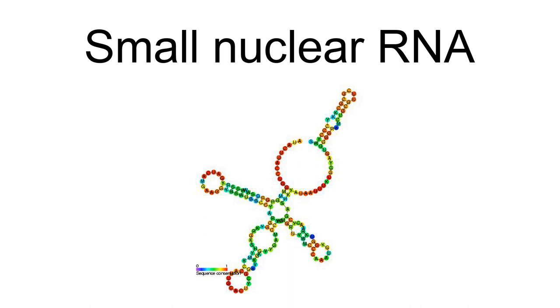The length of an average snRNA is approximately 150 nucleotides. They are transcribed by either RNA polymerase 2 or RNA polymerase 3.